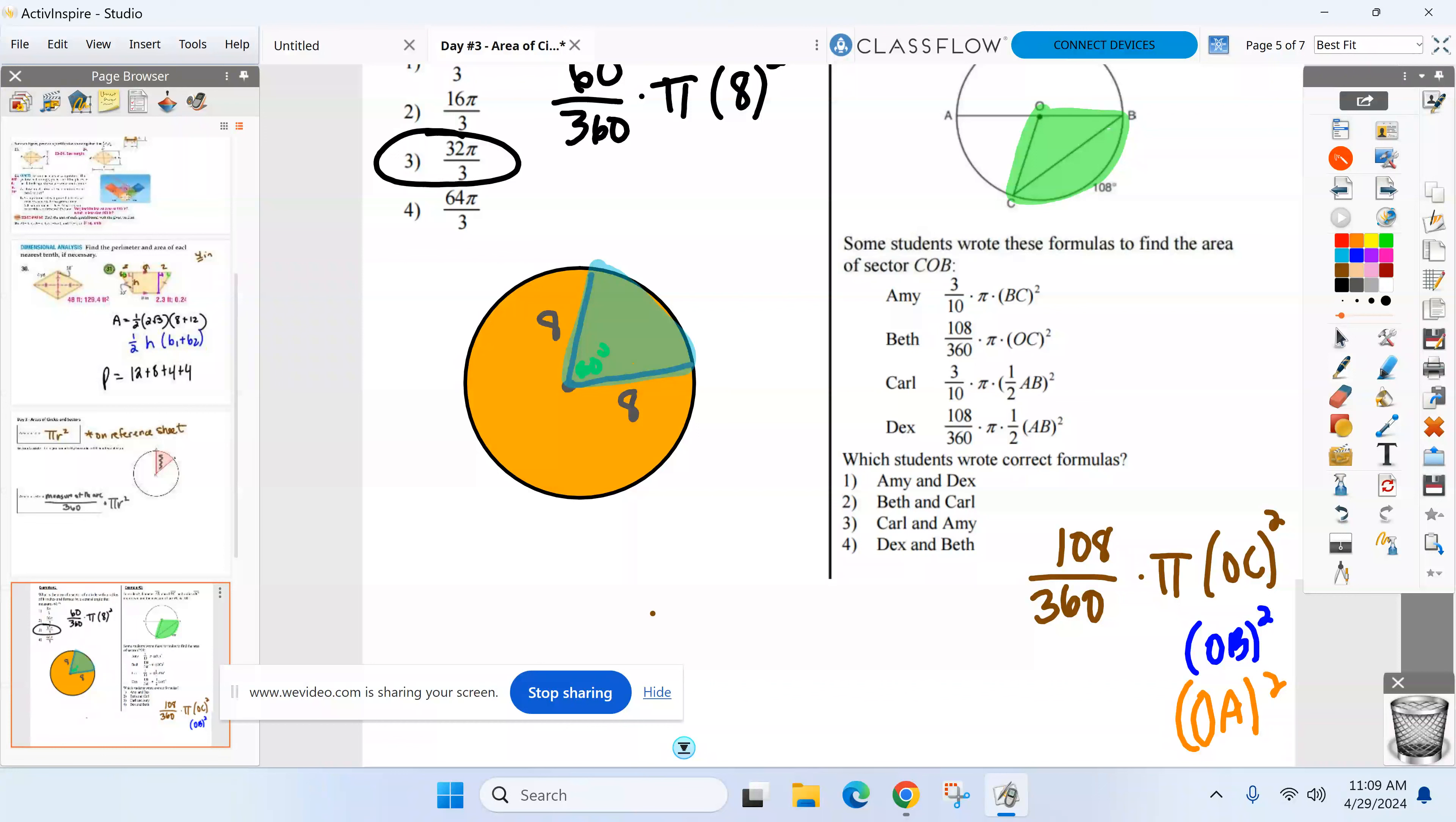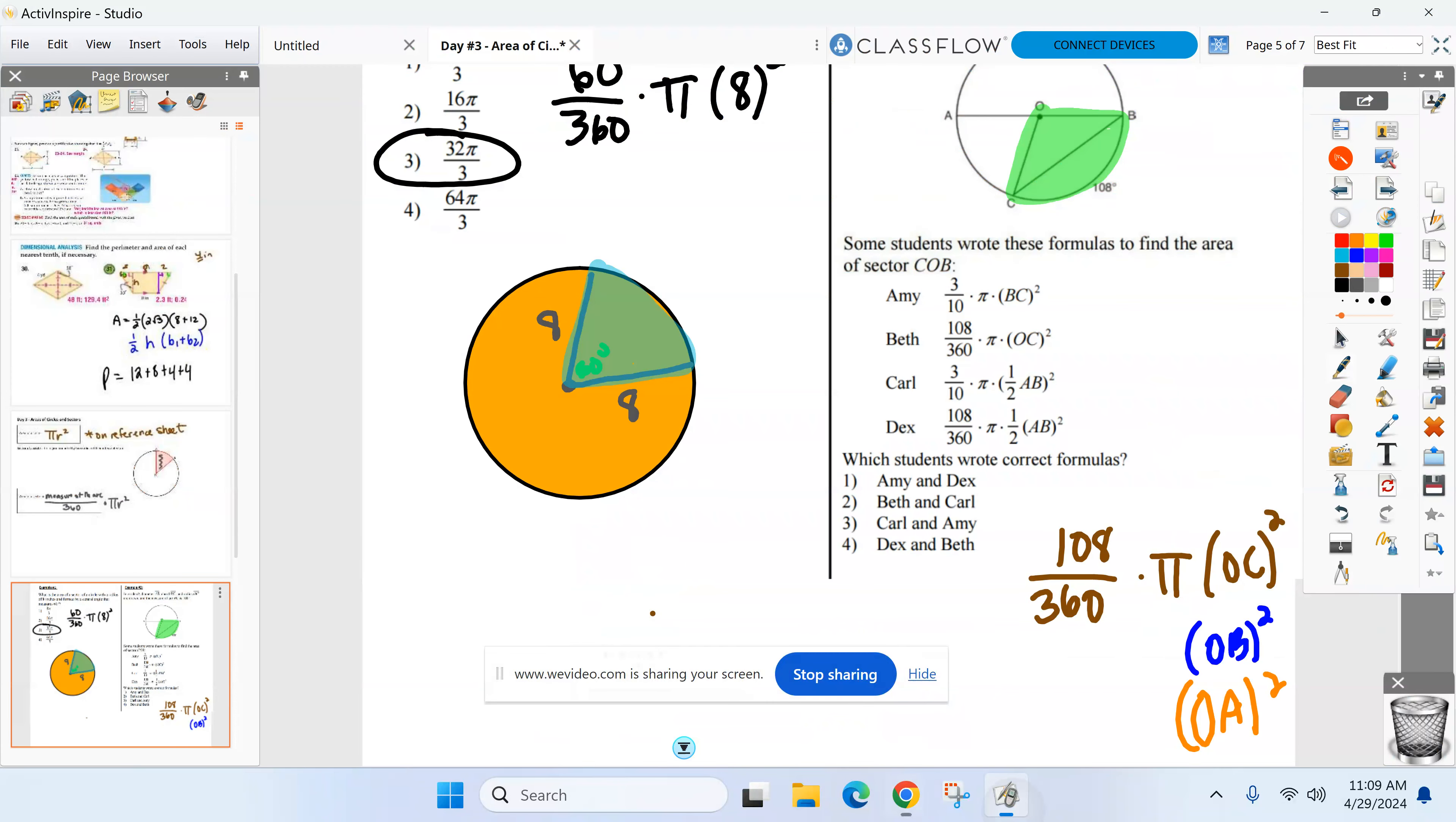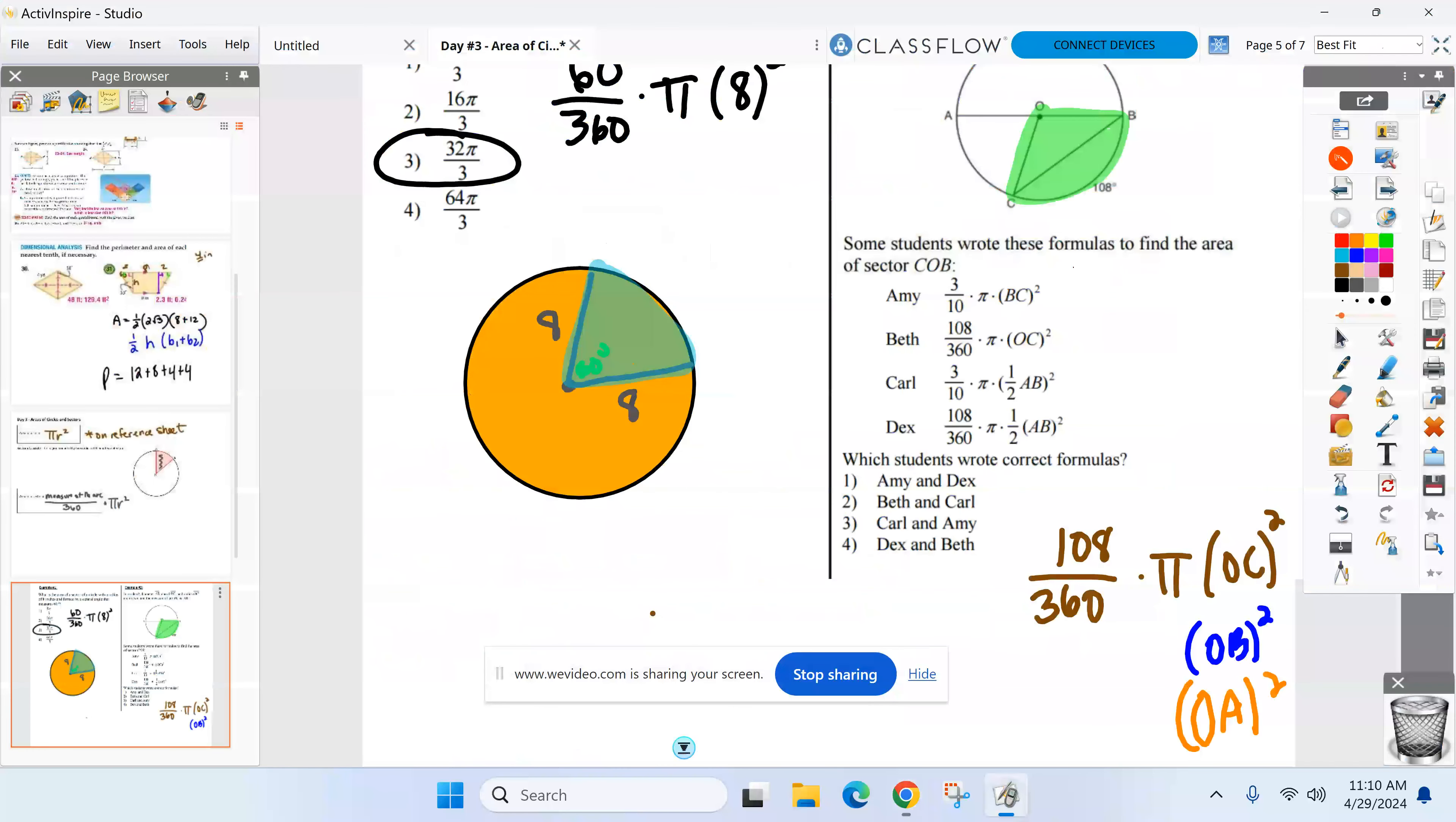Charlie, back to you. Just the name of one. OC. So I could do pi times OC squared. Some of you may have given me OB squared, and one more, another person may have given me OA squared. So these are all valid formulas on how to find sector COB. Let's go to these kids. Amy, she's three tenths. We used 108 over 360. Automatically wrong? Whoa, whoa, whoa. Take a look. 108 over 360 is three tenths. She just used the reduced answer, so we're okay there. Let's go to the rest of her formula. Pi, okay. BC, what's BC in that diagram? That's a chord. We should use a radius squared. So Amy, embarrassing at honors math.